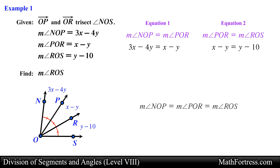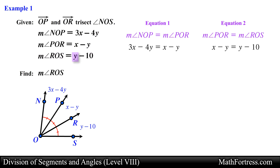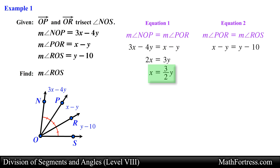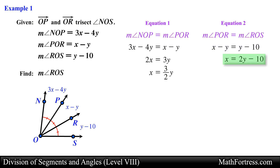Next we notice that the algebraic expression for angle ROS only contains the variable y, so we only need to determine the value of this variable and do not need to know the value of x. With this in mind, let's go ahead and solve for x in the first equation. Solving for x in the first equation we obtain the following. We now do the same for the second equation and solve for x, and doing that we obtain the following.